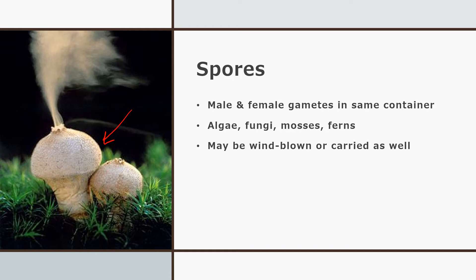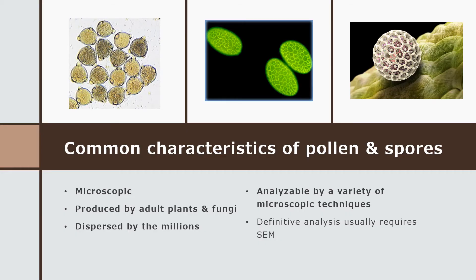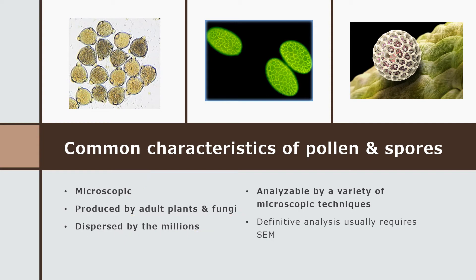Spores may be windblown or carried, and they do not use the same terminology as pollen. Common characteristics of pollen and spores include that they're always microscopic — you might see a cloud of them, but that's really a dense assembly, not individual entities. They're produced by adult plants and fungi that are in fully sexually mature stages of development. They are dispersed by the millions; in springtime you see bright yellow window sills because pollen is produced in such high quantities it lays down in thick mats.